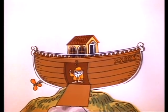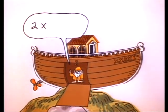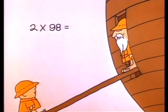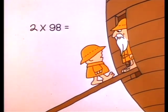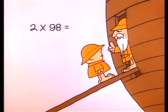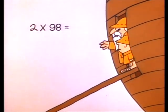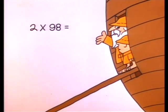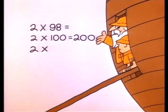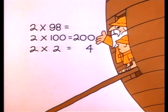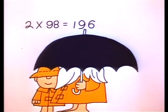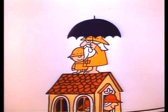Now, what's 2 times 98? That's hard! No, it's very simple. 2 times 98 equals 2 times 100 minus 2 times 2. That's 200 minus 4 — 196. Elementary.